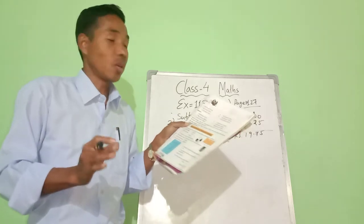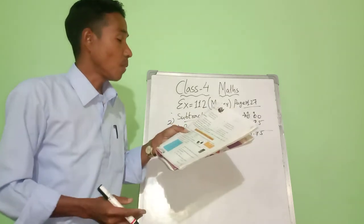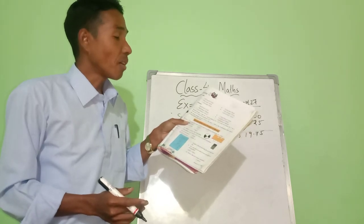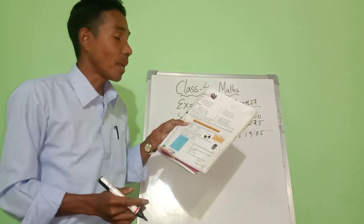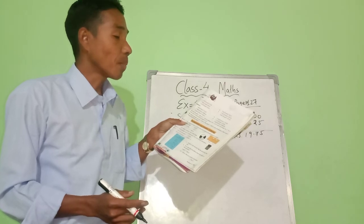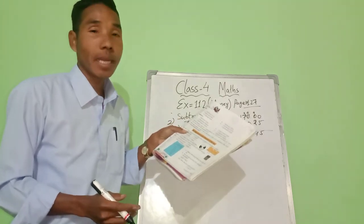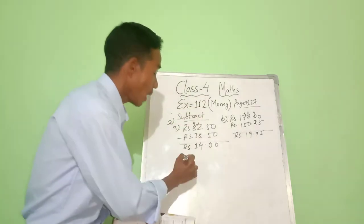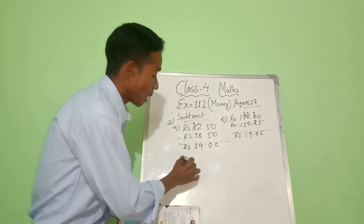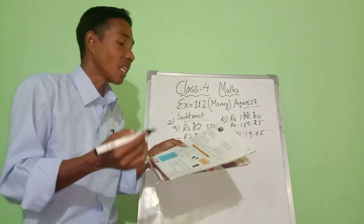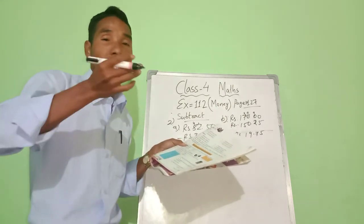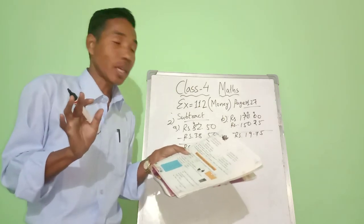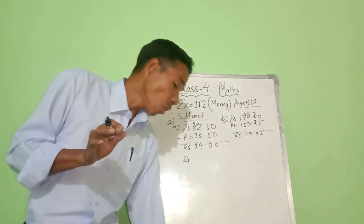Number four: Mrs. Core bought something for rupees 450.75 paise. She gave 1000 rupees to the shopkeeper — how much did she get back? Write 1000 rupees on top, then minus 450.75. If you do the subtraction you will get the answer. This is your homework — try to do it by yourself at home.